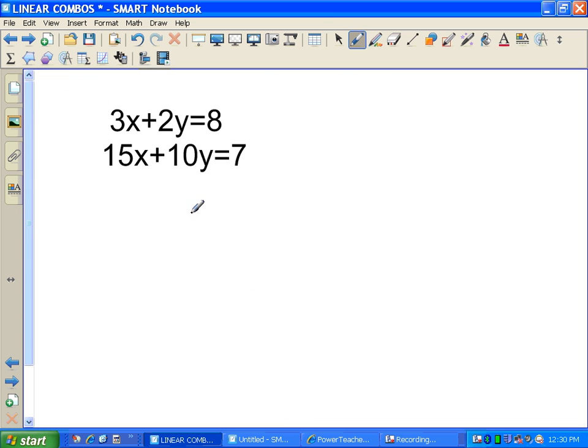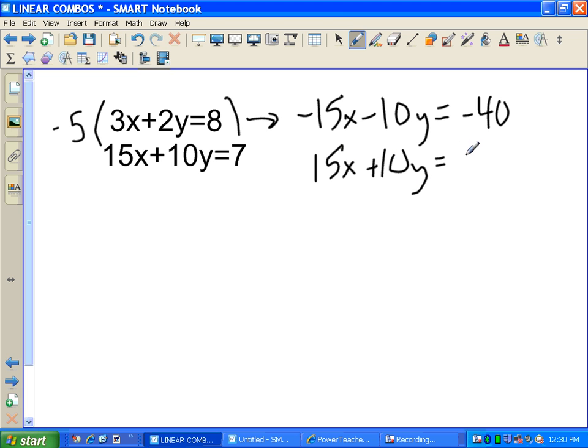Let's see. We can make this really good. 2 times 5 is 10. I'm going to multiply by 5. I'm going to multiply by negative 5. Okay? Negative 15x minus 10y equals negative 40. 15x plus 10y equals 7. Add those together. Look what happens. Pay no attention to the beeper. It means I get about 30 seconds more. If I add these together, I get 0 plus 0 equals negative 33. So 0 is equal to negative 33. Is that ever true? That is never true. Okay? So there is no solution to this equation.